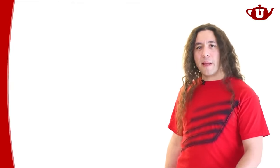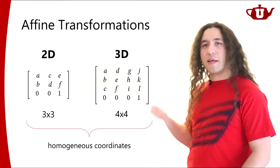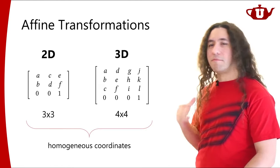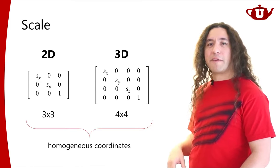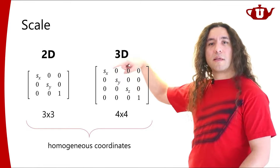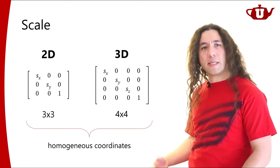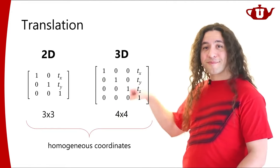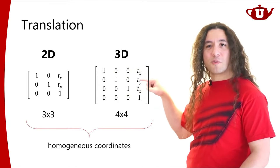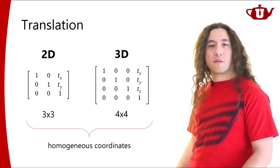For 3D affine transformations, the idea is fairly similar to 2D. In 2D I had a 3 by 3 matrix; in 3D with homogeneous coordinates I'll have a 4 by 4 matrix. The scale matrix is again diagonal — scale values along the diagonal, bottom row is 0, 0, 0, 1. For translation, the 3 by 3 part is an identity matrix, with translation components tx, ty, and tz in the last column, and the bottom row is 0, 0, 0, 1.